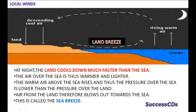At night, the land cools down much faster than the sea. The air above the sea is warmer and lighter. The warm air above the sea rises and thus the pressure over the sea is lower than the pressure over the land. Air from the land therefore blows out towards the sea. This is called the land breeze.